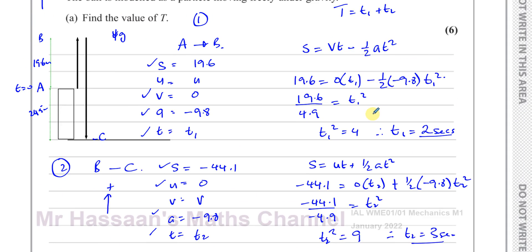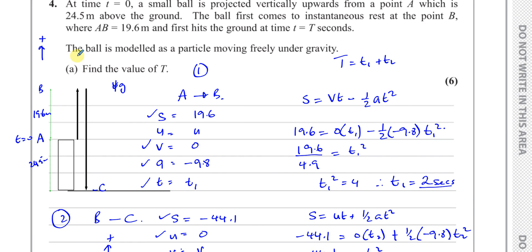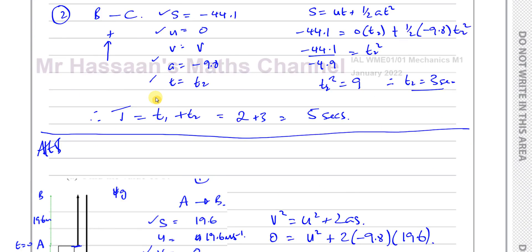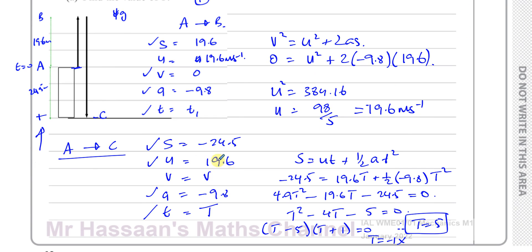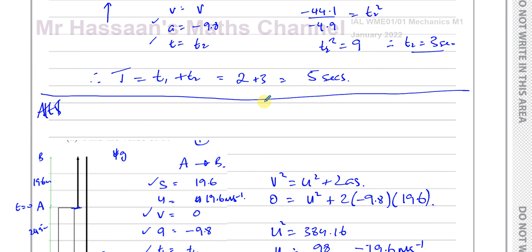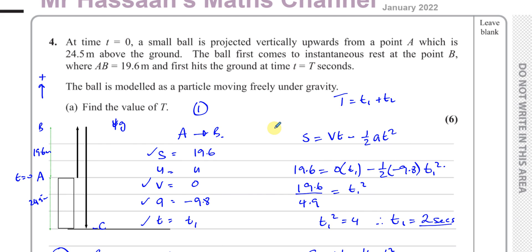An important point to keep clear: s in SUVAT is displacement, not distance traveled. From A to C, the ball travels up and then down past A, but the displacement is −24.5, not 44.1. Between A and B the displacement is positive 19.6. C is below A, and since we're taking up as positive, the displacement from A to C is negative 24.5. This distinction between displacement and total distance is very important.